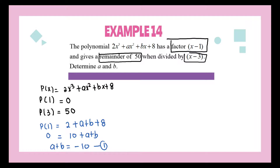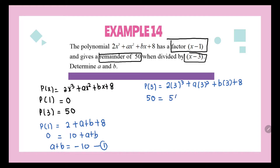For Equation 2, we use P(3) = 50. Substituting: 2(3³) + A(3²) + B(3) + 8 = 50. So 54 + 9A + 3B + 8 = 50. Simplifying gives 3A + B = −4, which is Equation 2.